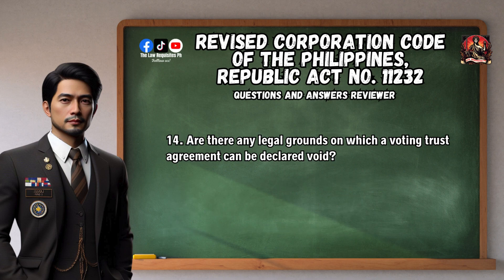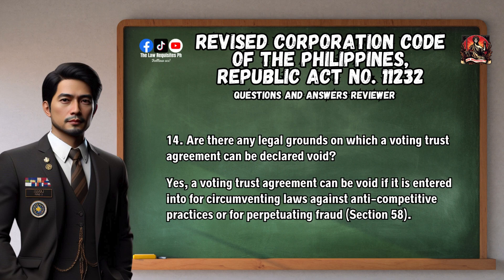Question 14: Are there any legal grounds on which a voting trust agreement can be declared void? Yes, a voting trust agreement can be void if it is entered into for circumventing laws against anti-competitive practices or for perpetuating fraud. Section 58.